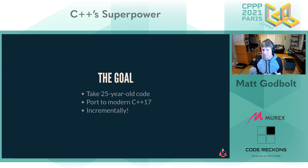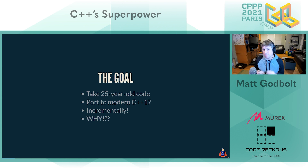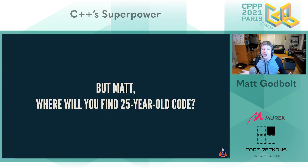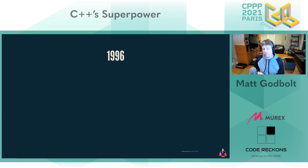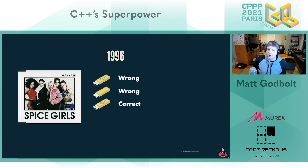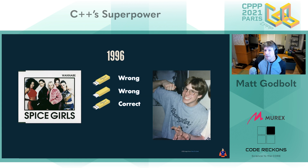I'm going to explain why you should care why this is important, and along the way we'll see some really choice bits of ancient code and how you can improve them using modern C++ idioms. The question you're probably shouting right now is: 'But Matt, where will you find 25-year-old code? Surely such stuff does not exist?' Well, let's think about what was happening 25 years ago. In 1996, the Spice Girls were in the charts, USB had just been introduced, and I was studying for a physics degree at Exeter University.